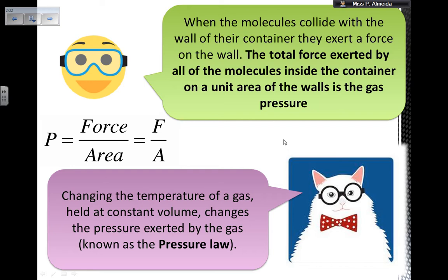Now, changing the temperature of a gas held at a constant volume changes the pressure that is exerted by the gas. And this is known as the pressure law. So if I increase the temperature, I increase the pressure. If I decrease the temperature, I decrease the pressure. All of that if the volume is constant. And this is called the pressure law.